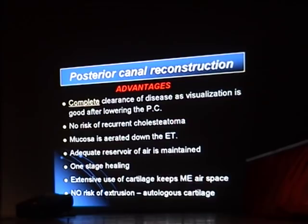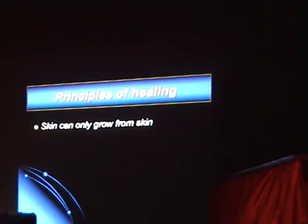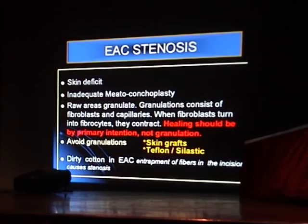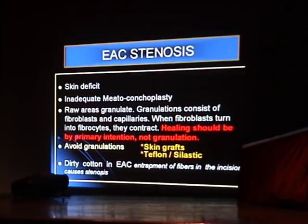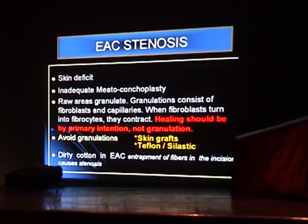Key healing principles: skin can only grow from skin. A skin deficit will cause granulation — granulation consists of fibroblasts and capillaries; when fibroblasts turn into fibrocytes, they contract. Healing should be by primary intention, not granulation. To secure primary intention healing, line everything with skin; large raw areas must be grafted, and small raw areas can be covered with Teflon or silastic.